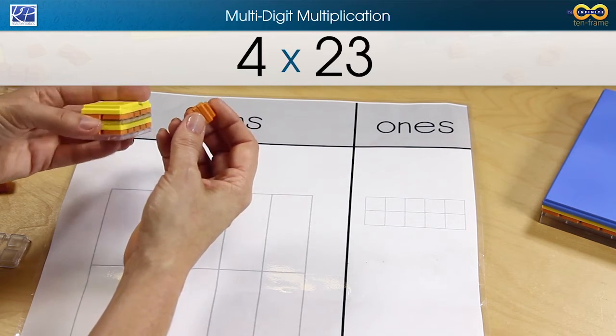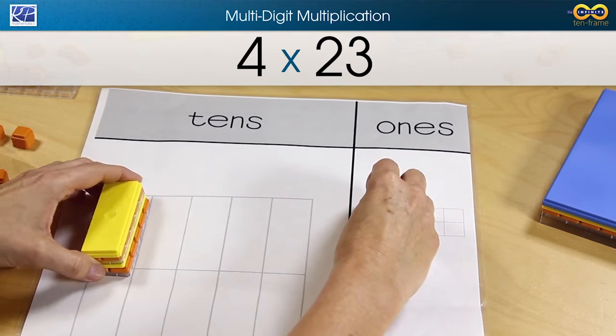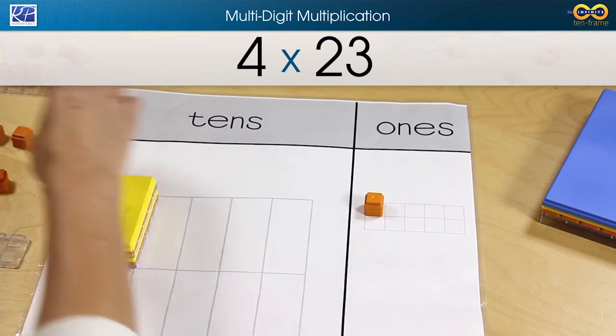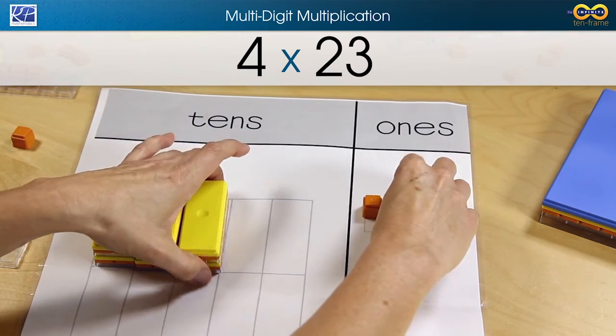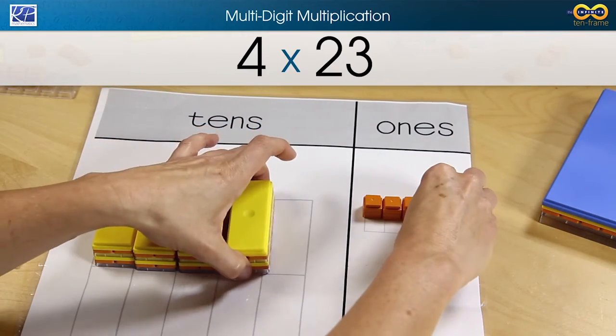So 4 times 23 allows me to show there's one group of 23, two groups of 23, three groups of 23, four groups of 23.